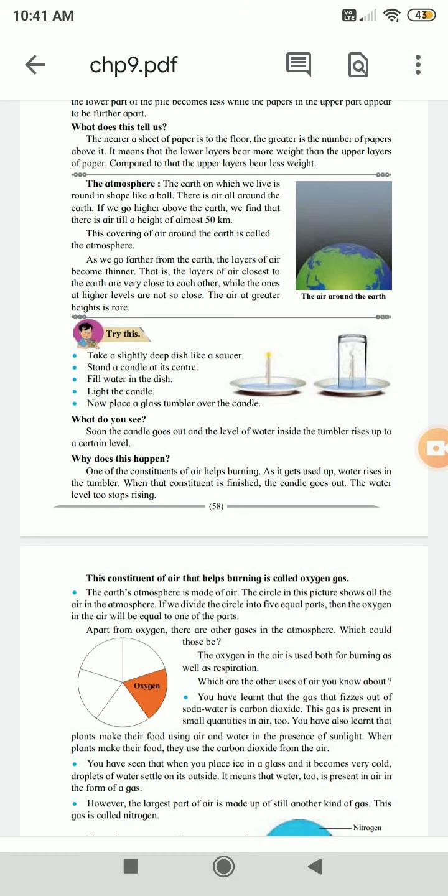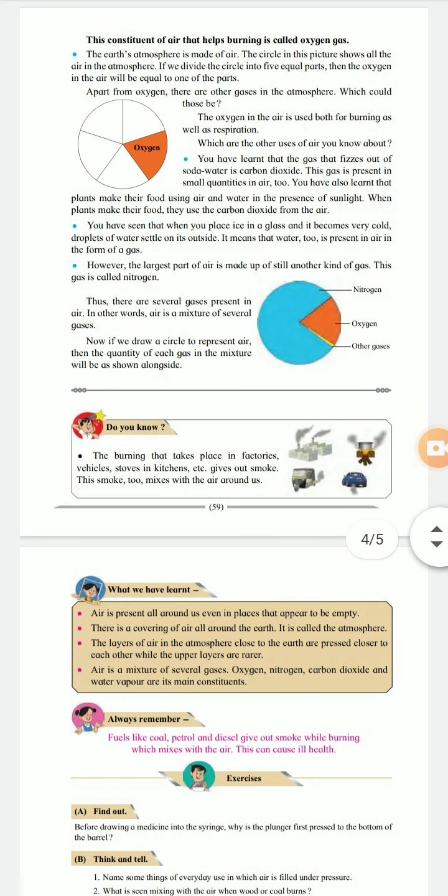You have seen that when you place ice in a glass and it becomes very cold, droplets of water settle on its outside. It means the water too is present in the air in the form of a gas. However, the largest part of air is made up of still another kind of gas. This gas is called nitrogen.